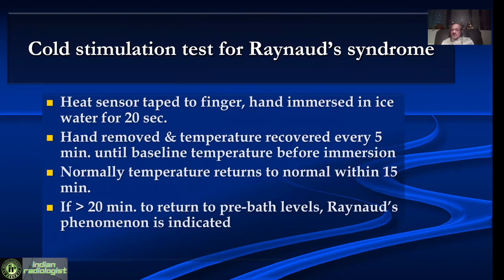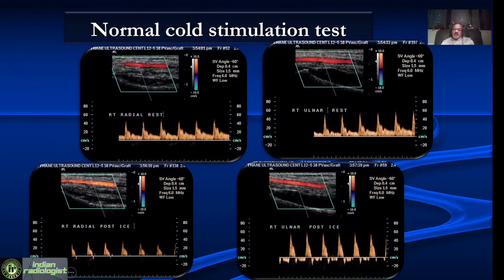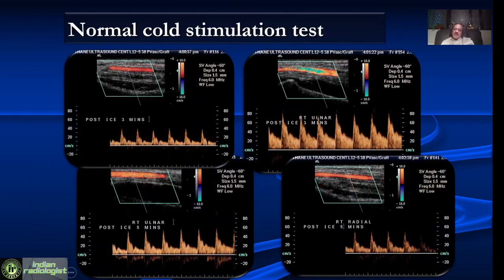There is also a cold stimulation test for Raynaud's syndrome, done when suspecting systemic disorders like SLE. We ask the patient to hold ice for about 15 seconds and look at the waveform — after holding the ice, we see a very high resistance waveform with reversal of flow in diastole. Then we ask the patient to release the ice, and in a normal patient, after one to three minutes, the waveforms return to normal, sometimes with higher diastolic flow. This is a normal response.